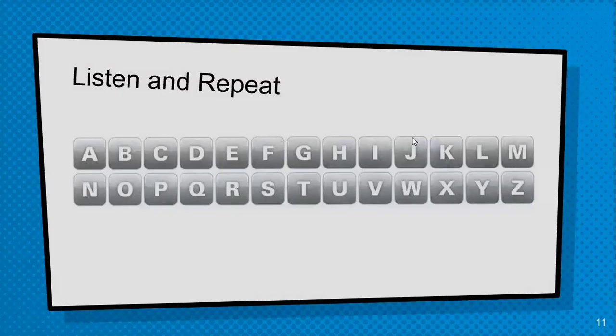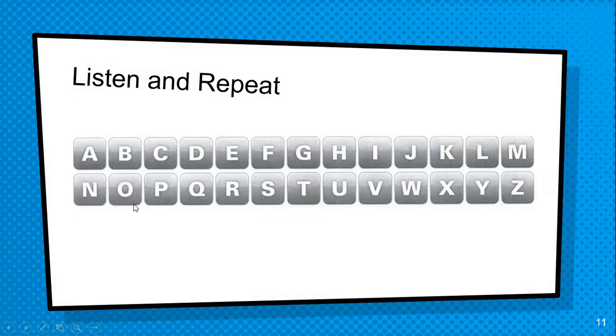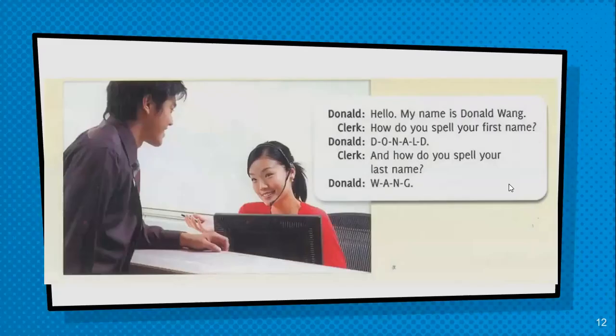Listen and repeat: A, B, C, D, E, F, G, H, I, J, K, L, M, N, O, P, Q, R, S, T, U, V, W, X, Y, and Z. Hello, my name is Donald Wong. How do you spell your first name? D-O-N-A-L-D. And how do you spell your last name? W-O-N-G.